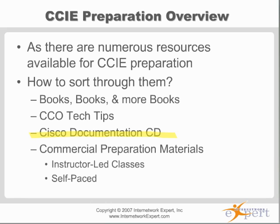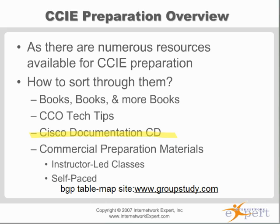The documentation lists these kinds of examples, but stay away from them. If you see a feature like that and wonder whether it'll appear on the CCA lab, go to Google and search for it — for example, BGP table map — using site:www.groupstudy.com or site:forum.internetexpert.com and see how many CCA candidates discuss that topic. You'll probably see it pop up once or twice over the last three years.